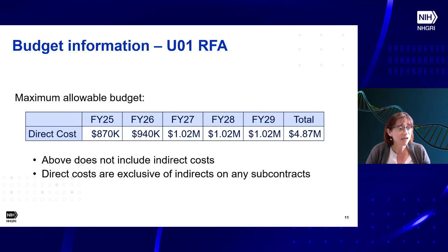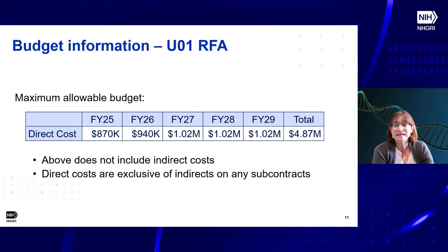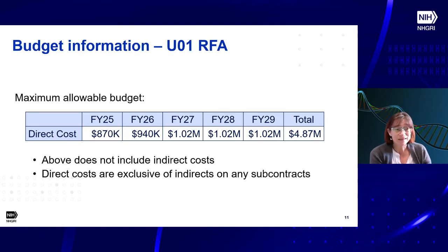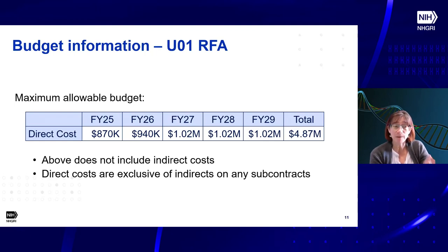Sometimes the correct response to an e-consult will be to make a referral to a specialist. There are some genetic syndromes where you absolutely need a specialist to do an examination. As far as that being a metric — measuring the number of e-consults that can be resolved by the ordering provider versus those that need to be sent to a specialist — that would be a great metric to propose. Looking at the literature, that's actually a very common metric measured in genetic e-consult services.